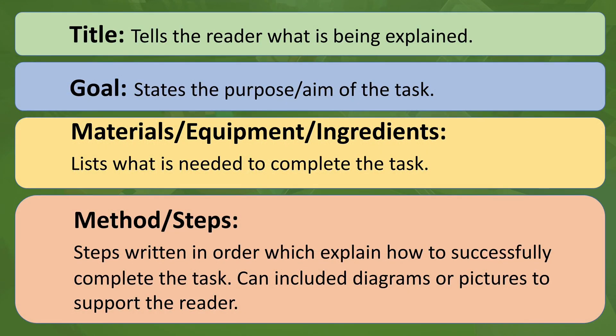Included in a procedural text is the title, telling the reader what is being explained. Next is the goal, stating the purpose or aim of the task. We then have materials, equipment, or ingredients — a list of what is needed to complete the task. Finally, we have the method or the steps: steps written in order which explain how to successfully complete the task. This can include diagrams or pictures to support the reader.